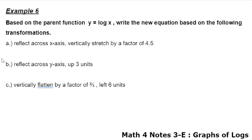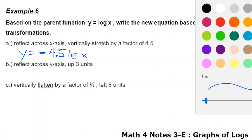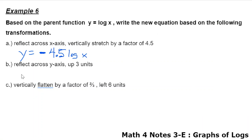For these guys, if I am going to reflect across the x-axis, I want a negative up front. I'm vertically stretching by a factor of 4.5. And that's the only changes, so I'm just going to put log of x after that. Here, we are reflecting across the y-axis, which means that it is inside with the x, the negative sign, and then up 3. And then the last one, we are vertically flattened by a factor of 2 thirds, and we are going left 6, which means we're actually going to do plus 6 inside with x. So those are the usual games that we play with transformations.